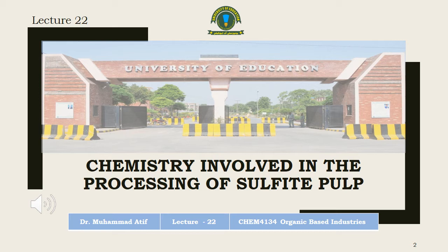The topic we are going to discuss is the chemistry involved in processing of sulphite pulp. The pulp for paper making may be produced from virgin fibre by chemical or mechanical means, or may be produced by repulping of paper for recycling. Paper production is basically a two-step process in which a fibrous raw material is first converted into pulp and then pulp is converted into paper.